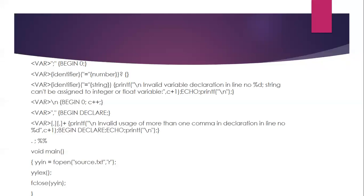Apart from the declaration state or variable state, any other character that is recognized — we are not going to do anything. That is represented by dot followed by semicolon. At the end, we close the rule part.